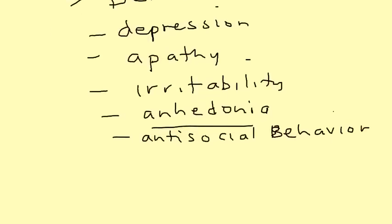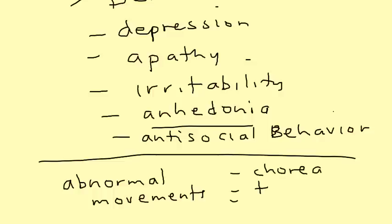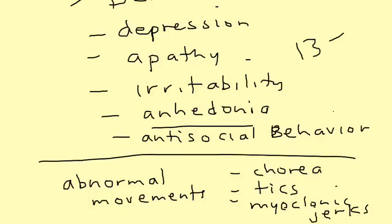Another component of the symptomatology is abnormal movements. We're talking about chorea — Huntington's chorea, remember that term — as well as tics and myoclonic jerks. These are some of the abnormal movements that can appear. This disease is progressive, and eventually a person can die within about 13 to 15 years of the onset of the disease.